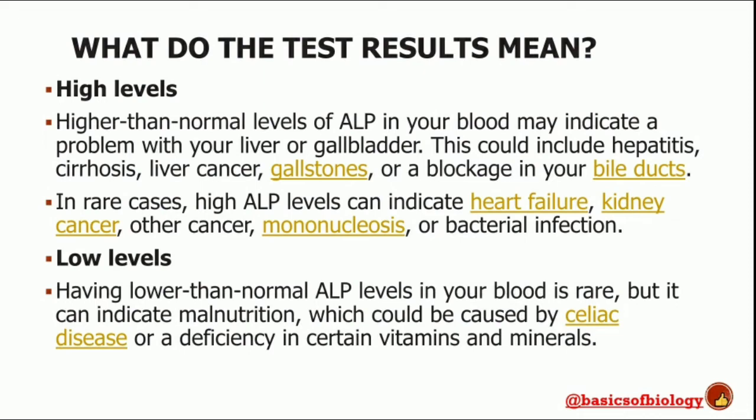When the results of your alkaline phosphatase test are in, your doctor will discuss them with you and suggest what to do next. Higher than normal levels of alkaline phosphatase in your blood may indicate a problem with your liver or gallbladder. This could include hepatitis, cirrhosis, liver cancer, gallstones, or a blockage in your bile duct.